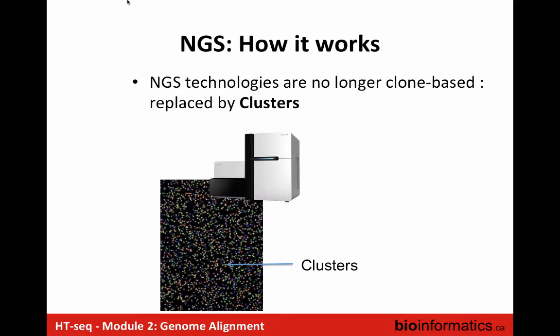In next generation sequencing, instead of using capillary sequencers, we use clusters of sequences and imaging. This is a representation of part of a flow cell. You take your DNA, put it on a flow cell, and the sequencer takes a picture at each cycle, at each base incorporation. It gives you a point — a cluster of luminescence — and is able to determine which base is at that position. It processes hundreds of millions of clusters at the same time for one lane, so it's really another level of data throughput.